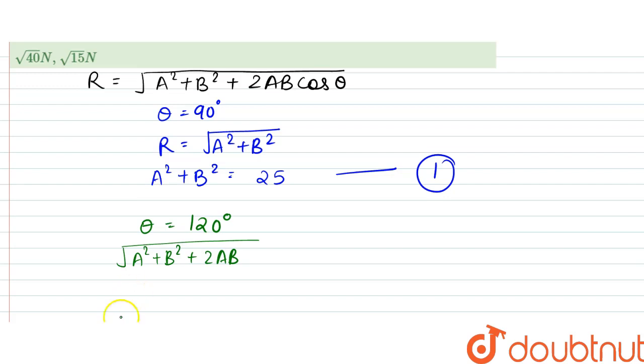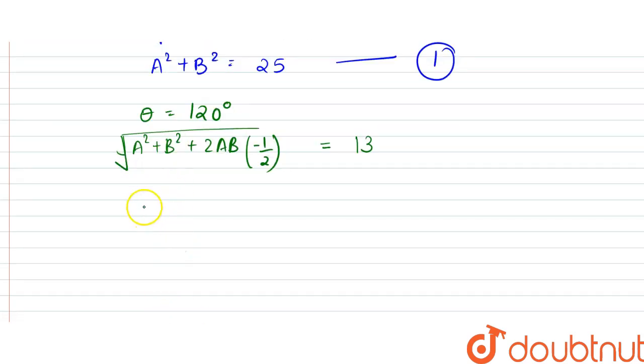So it will be minus half. The whole root would be equal to R squared, that is 13, root of 13 squared, so it would be 13. We can remove this root now because we have squared on both sides. So A squared plus B squared minus AB would be equal to 13.